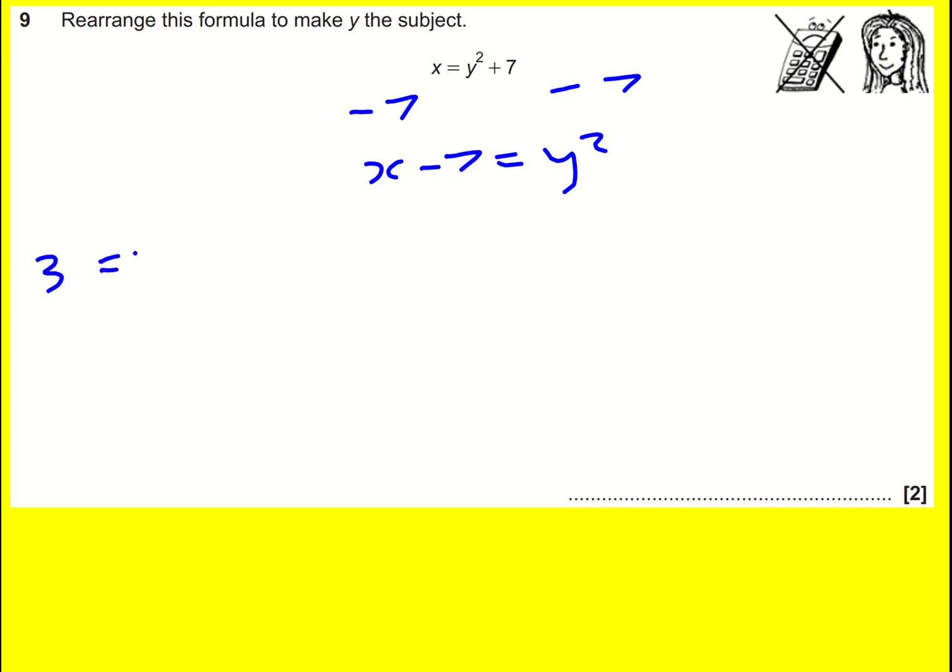It's a bit like if you had 3 equals y squared plus 2, then you want to work out y squared so you need to minus 2 from both sides to get y squared by itself. It's exactly the same idea, but this time I don't simplify it. I don't simplify 3 minus 2 to 1. I have to keep it as x minus 7.